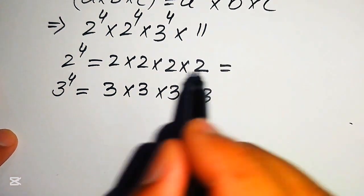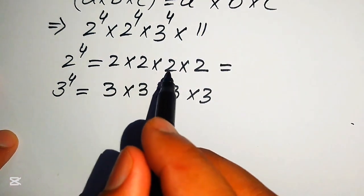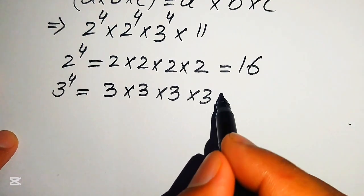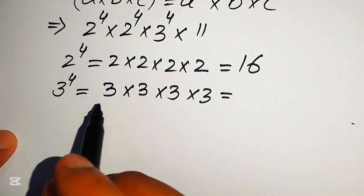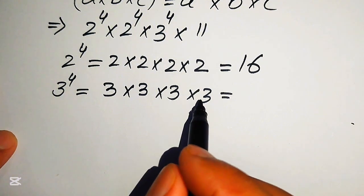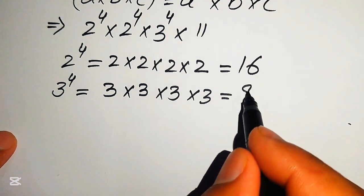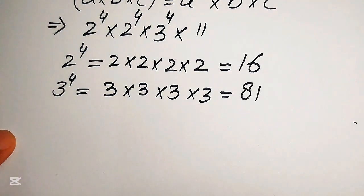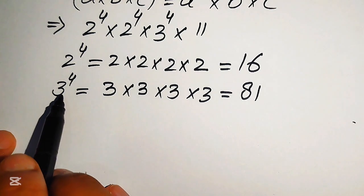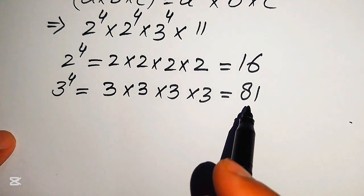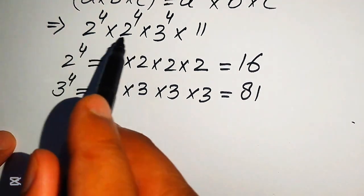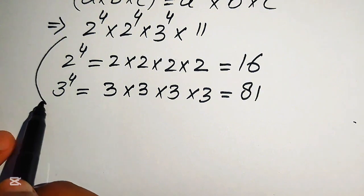2 times 2 is 4, 4 times 2 is 8, 8 times 2 is 16. And 3 times 3 is 9, 9 times 3 is 27, 27 times 3 is 81. So 2 to the power of 4 equals 16 and 3 to the power of 4 equals 81. Now we substitute these values into the expression.